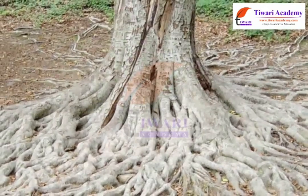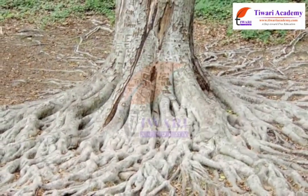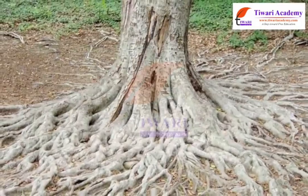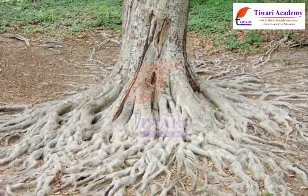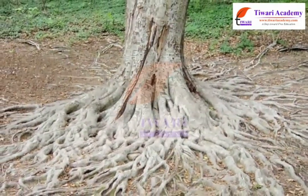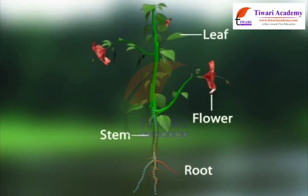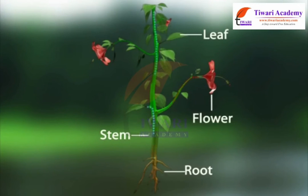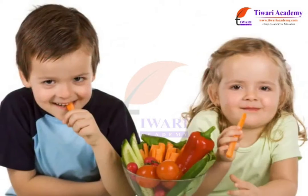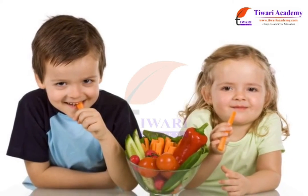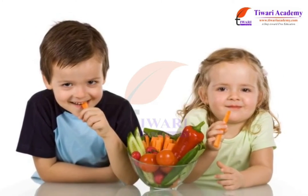Roots anchor plants to the soil, thus providing firmness to the plant. When it rains, the roots hold the soil in place so it is not washed away. Roots absorb water and minerals from the soil, which get distributed throughout the plant. Some roots store food produced by leaves.